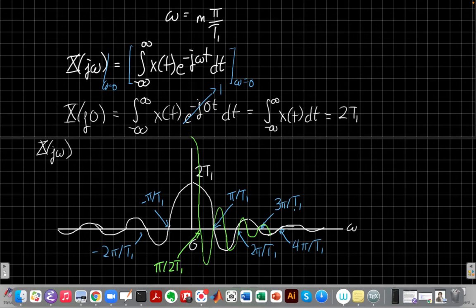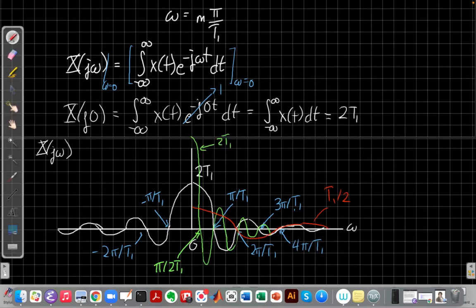Vice versa, when things get smaller in time, like if T1 got half as wide, right, if I went from T1 to T1 over 2, things would get twice as, it would get shorter, but twice as wide here. So the red line shows what happens when I go to T1 over 2. So again, that basic intuition carries over from discrete time. Things that are small, compact, pulled in together in time are wide in frequency. Things that are wide in time and slowly evolving in time are pulled in together or at low frequencies.